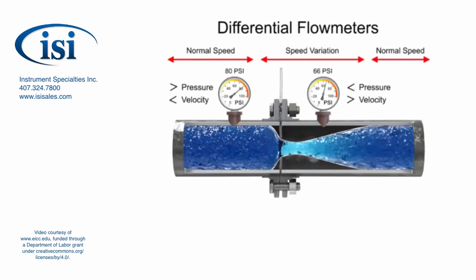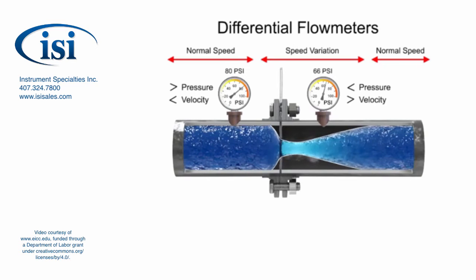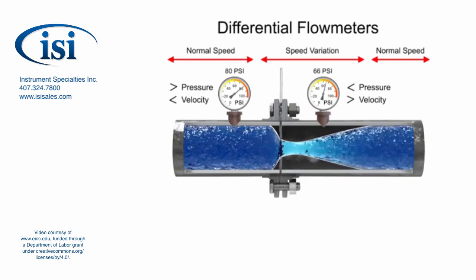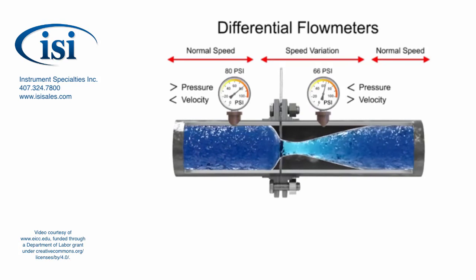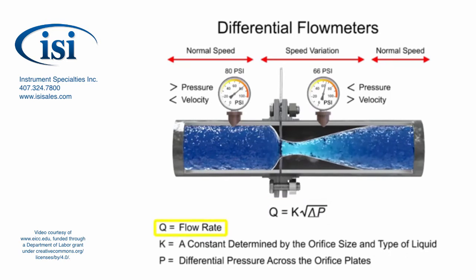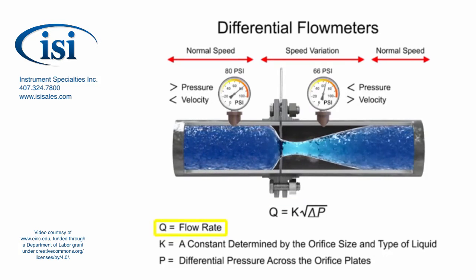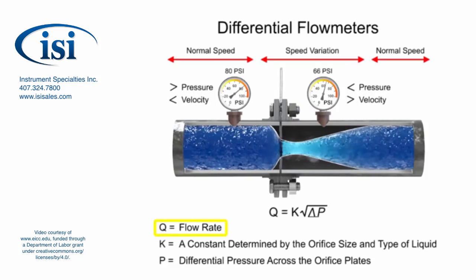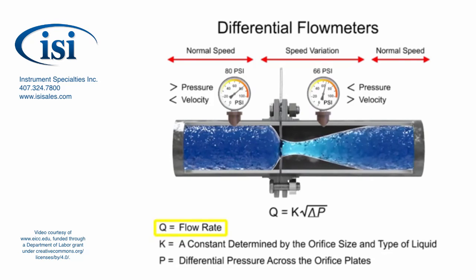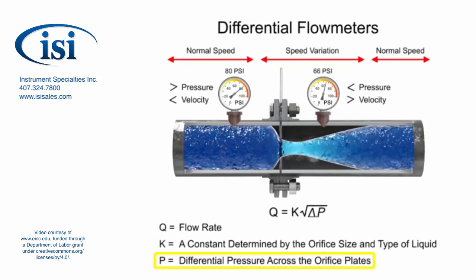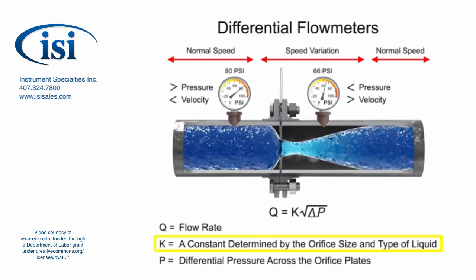With a known differential pressure and velocity of the fluid, the volumetric flow rate can be determined. The flow rate, q, of a fluid through an orifice plate increases in proportion to the square root of the pressure difference on each side multiplied by the k factor.